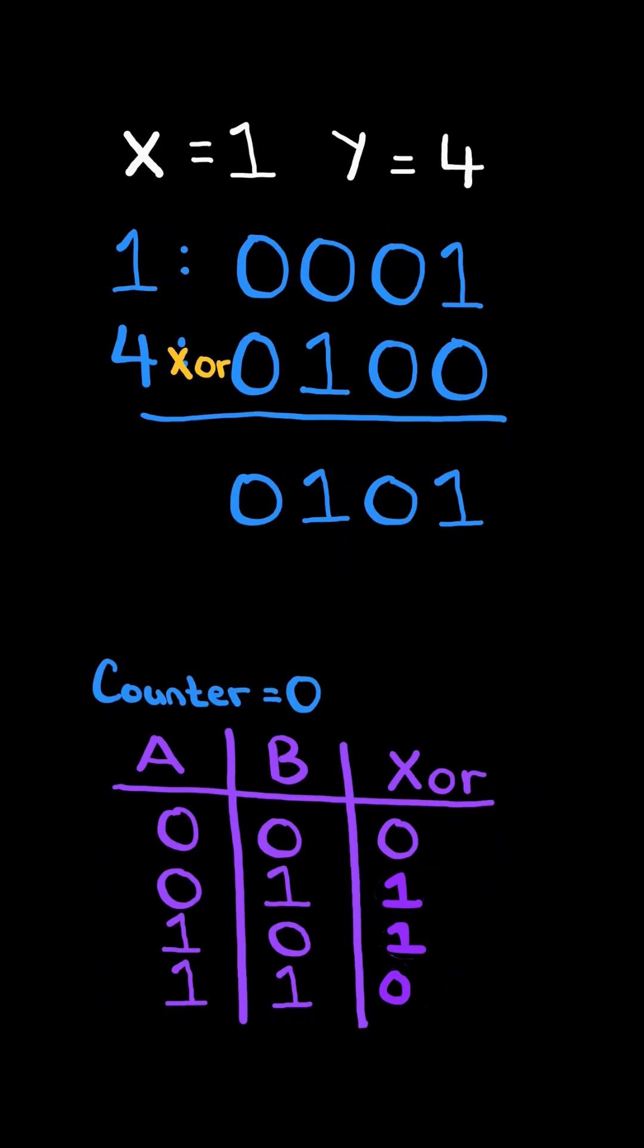We initialize a counter to 0 and perform a bitwise AND with 1. The result of this operation gives us the last bit, which we add to the counter.